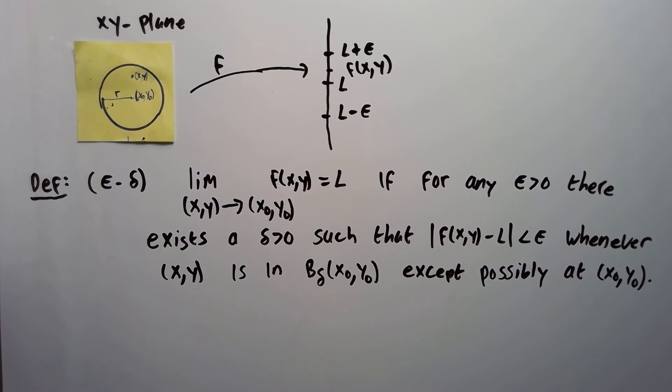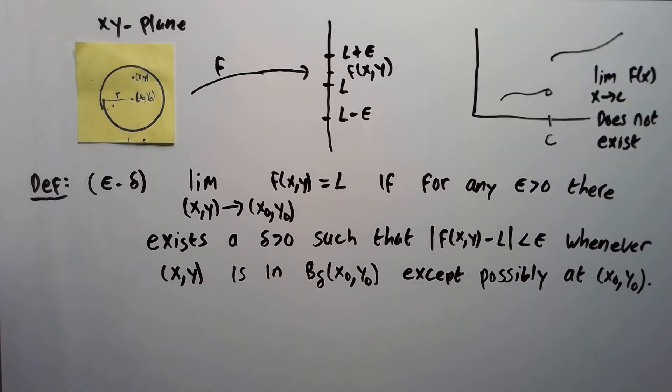First recall from single variable calculus that if you have a break in the graph like I have here, then the limit would not exist where the break happens. So the same thing would happen for a surface. Let me just show you a picture with the surface now.